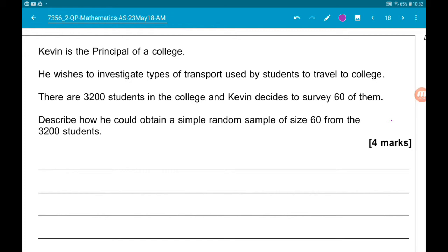When I have my 60 unique numbers, I would then select the 60 corresponding students from the population of 3,200 and I would ask those 60 students how they travel to college.